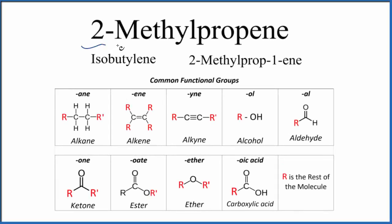Let's write the structural formula for 2-methylpropene. You'll also see this called isobutylene or 2-methylprop-1-ene. Both names are very common, but 2-methylpropene is the actual IUPAC name.